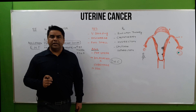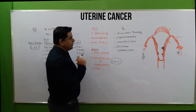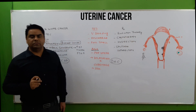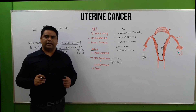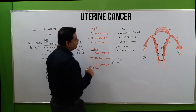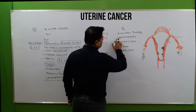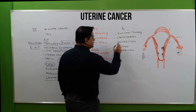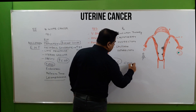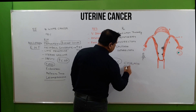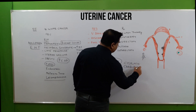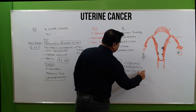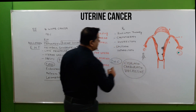Treatment of endometrial cancer includes radiation therapy, in which the beam is focused on the cancer cells. Radiation therapy includes brachytherapy and teletherapy. Chemotherapy is also useful and generally includes drugs such as cisplatin, carboplatin, and vincristine.